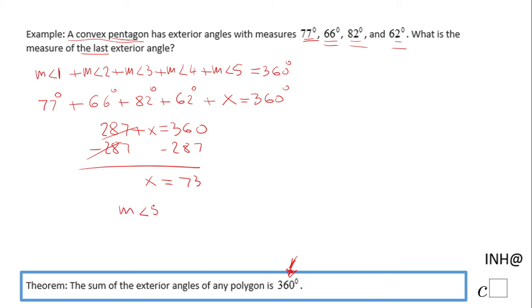So the measure of angle 5, the last exterior angle of this pentagon, will be nothing else than 73°. If you enjoyed this video clip, don't forget to click the like button and come back on C Squared for more help. Thank you.